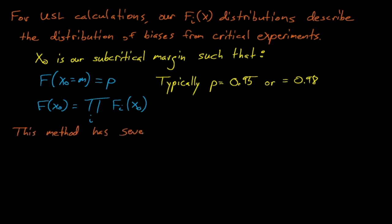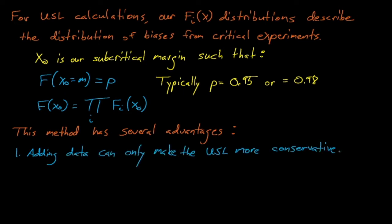This approach has several advantages. The first of which being that adding additional benchmark data points can only lower the USL, thus only making it more conservative. Just like how two of those three distributions didn't really affect the limit for x sub naught, adding benchmark bias distributions that are far to the left of the most extreme cases has almost no effect on the calculational margin. This is one huge advantage for the Whisper method.